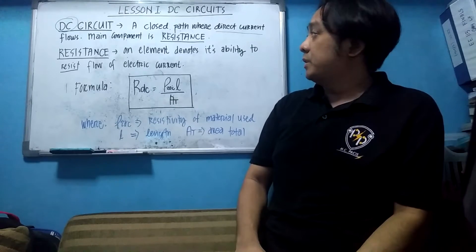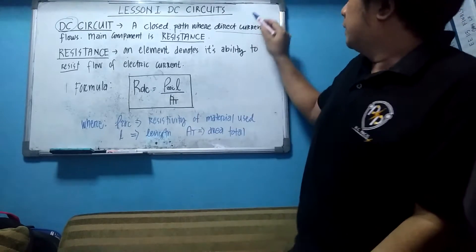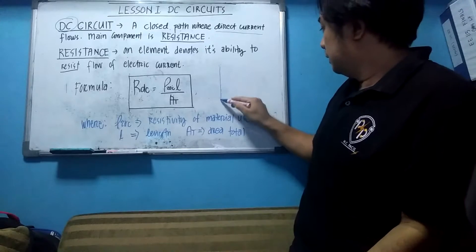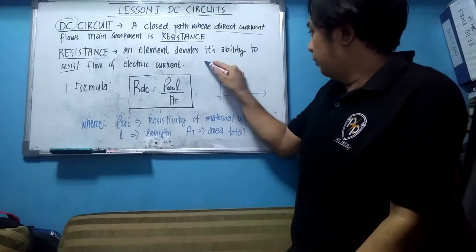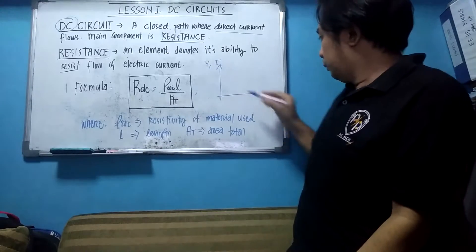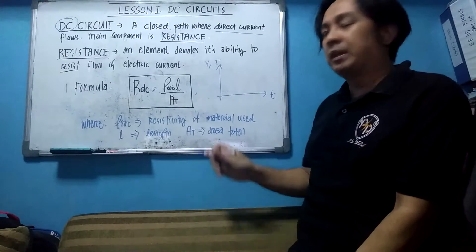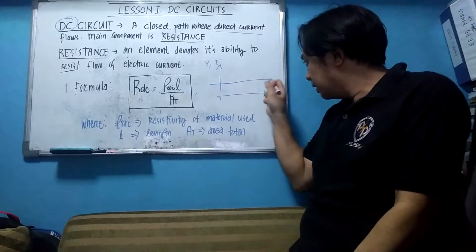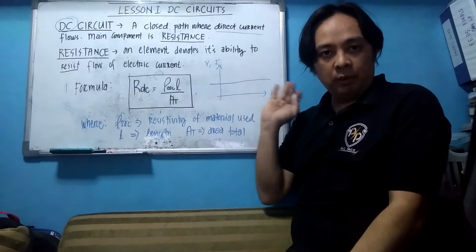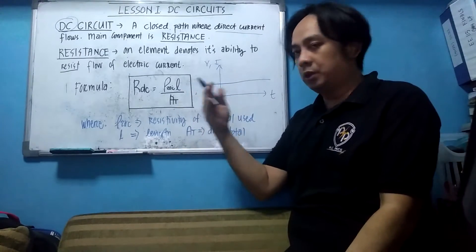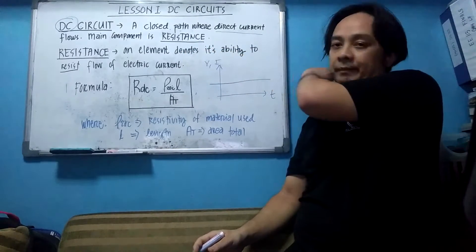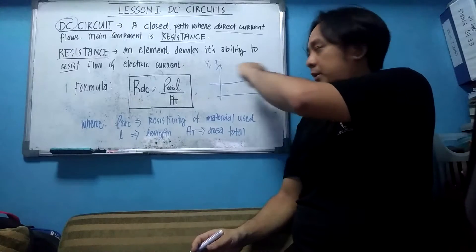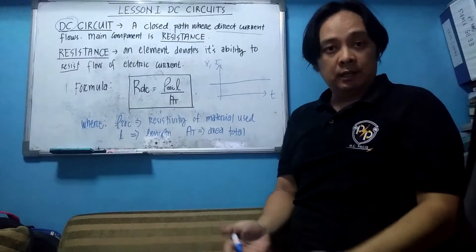And the main component is resistance. When I say direct current, in terms of signal, the voltage and current with respect to time is in a straightforward path. So it means the voltage and current, no matter what, they are in the same path or same angle.